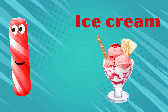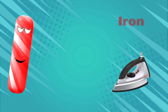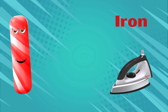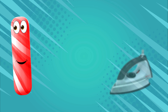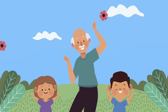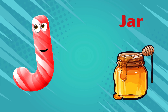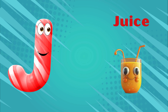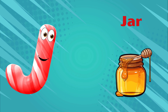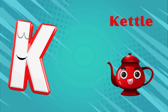I is for ice cream, i-i-ice cream. I is for iron, i-i-iron. I is for i-i-i-ice cream. I is for i-i-i-iron. J is for jar, j-j-jar. J is for juice, j-j-juice. J is for j-j-j-jar. J is for j-j-j-juice.